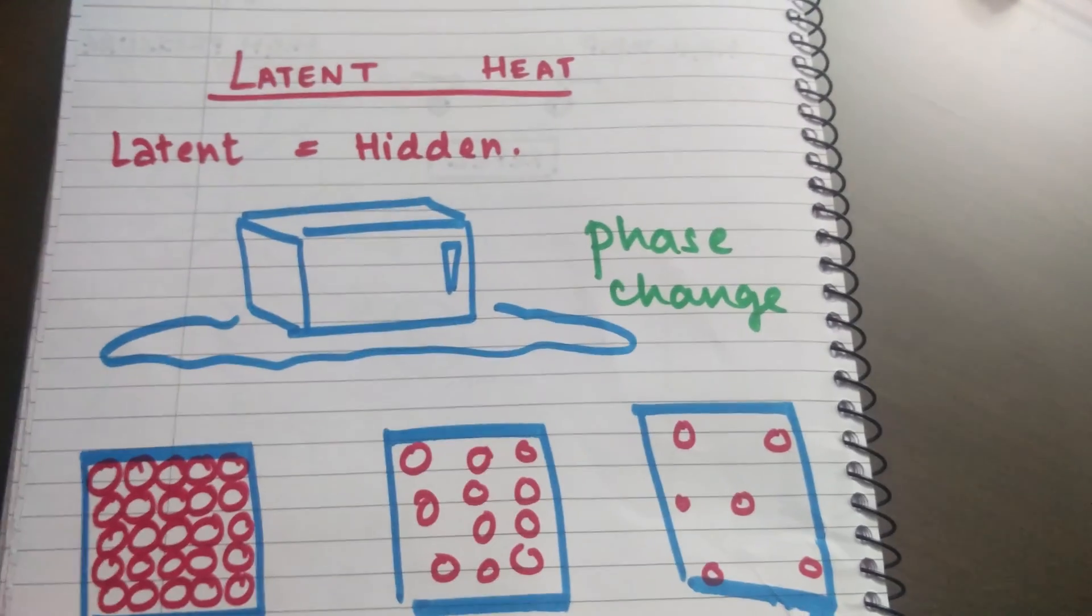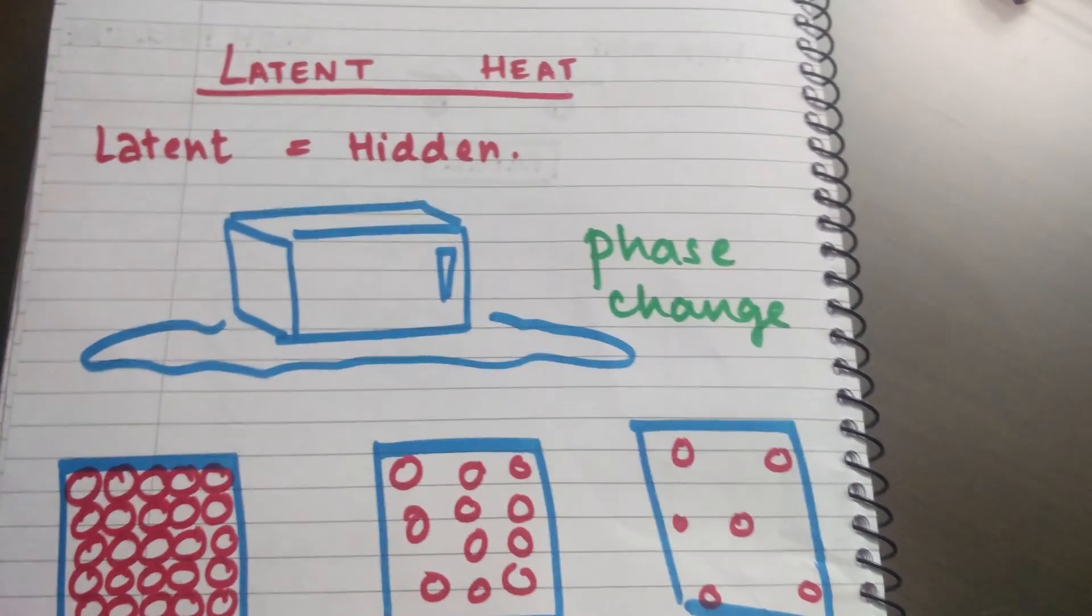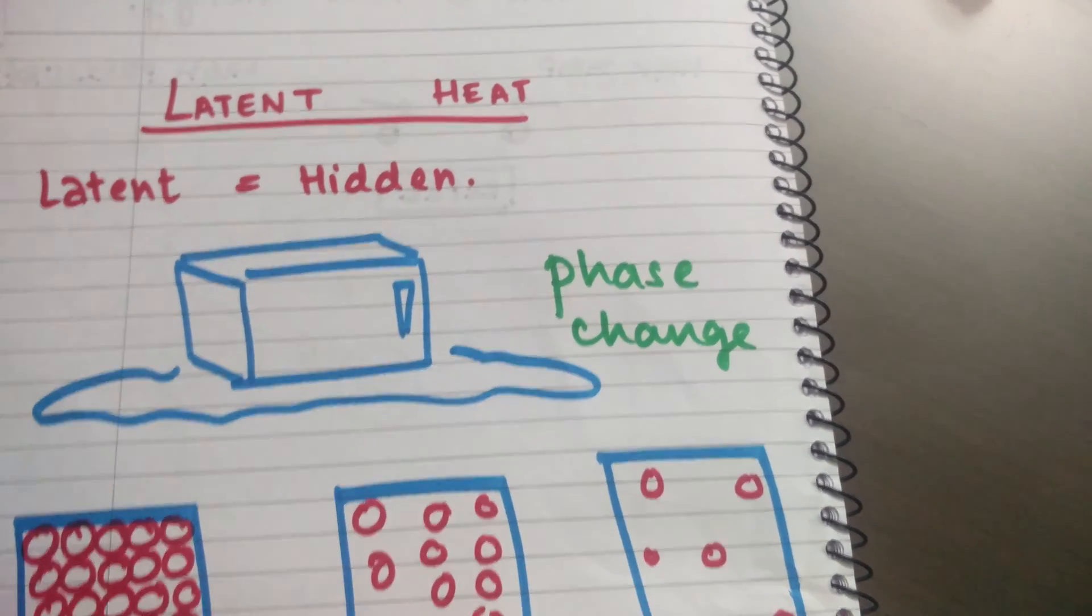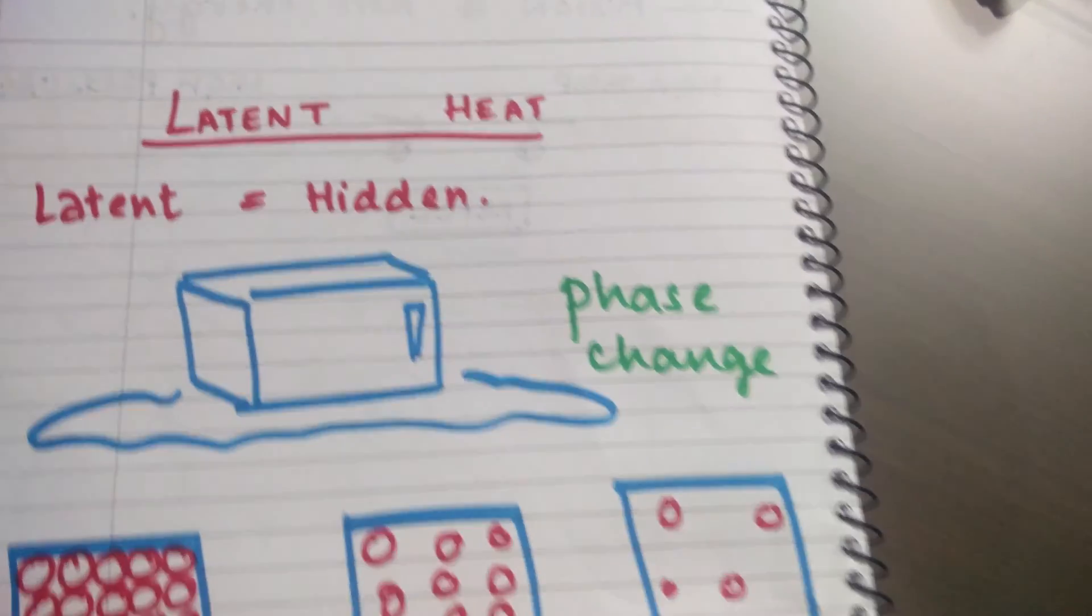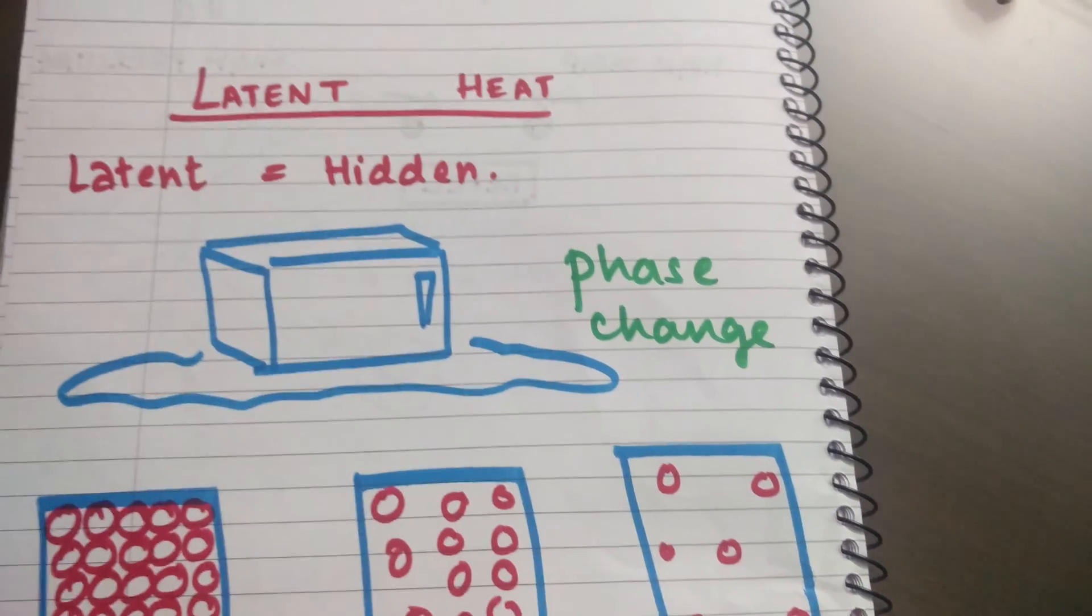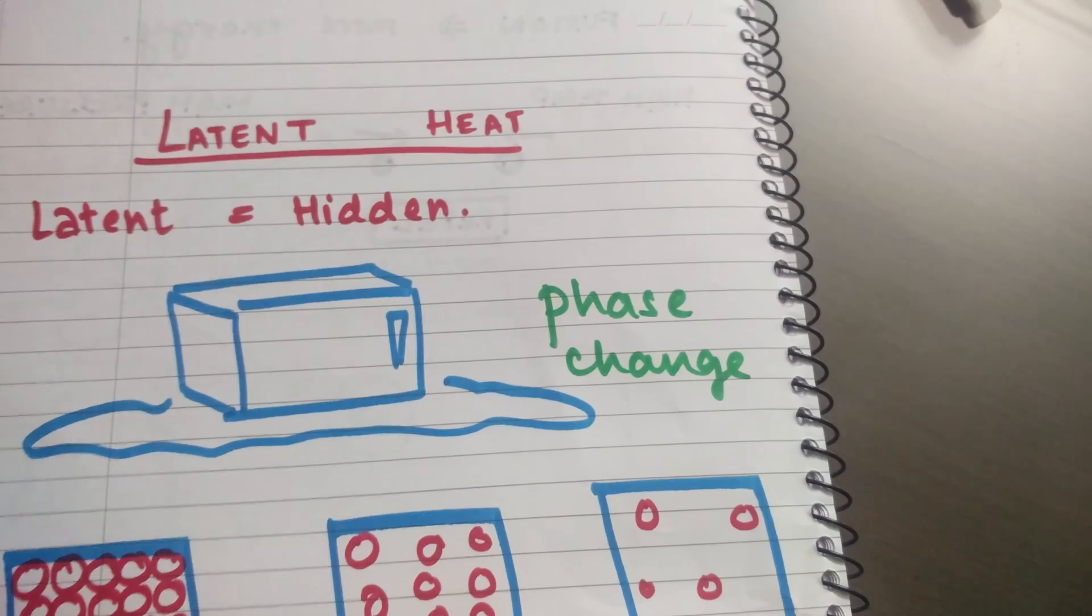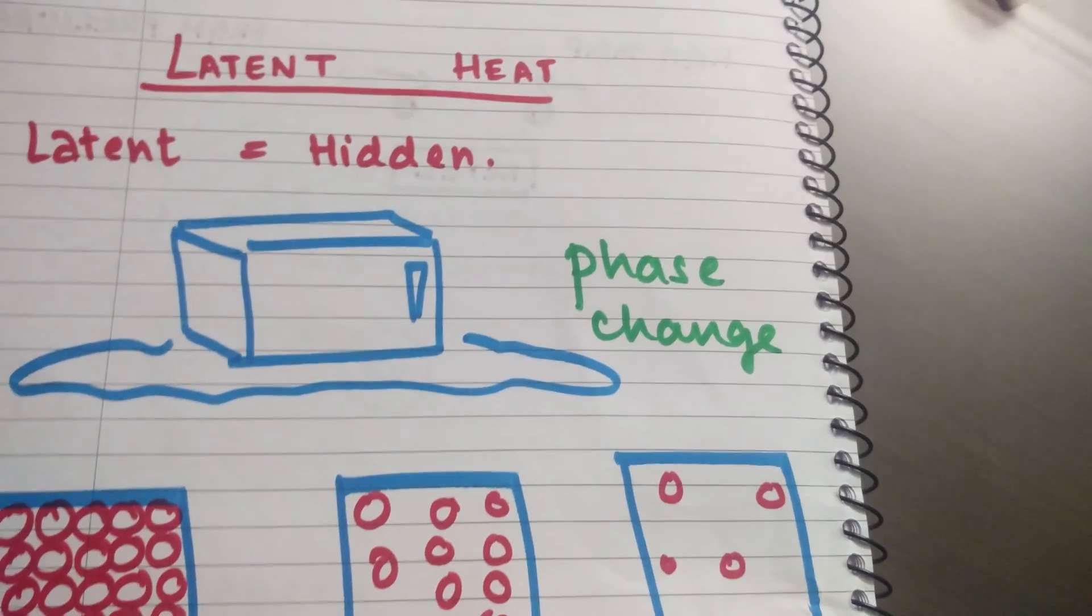Now why is this heat called hidden heat? This is because whenever phase changes take place, whenever you have a substance that changes from one state to another, its temperature always remains constant. Why does the temperature remain constant? When you heat something, the temperature increases because you are increasing the kinetic energy, right? And that helps to increase the temperature.